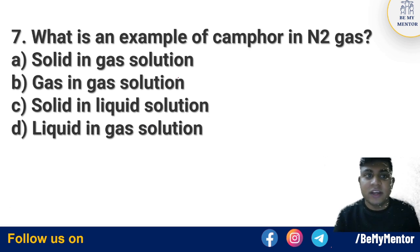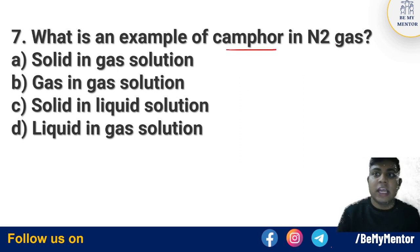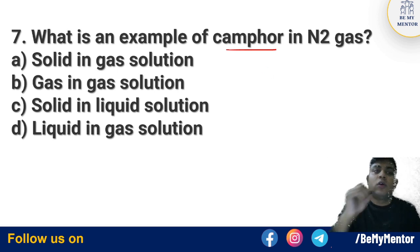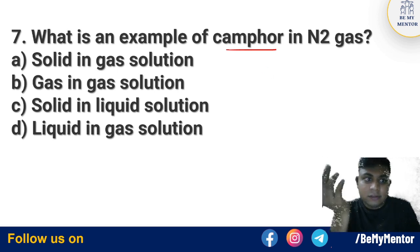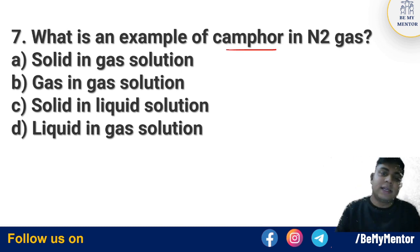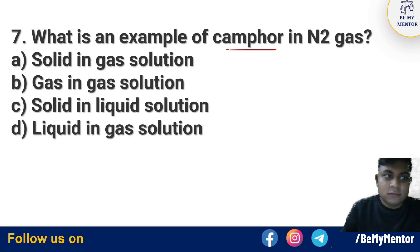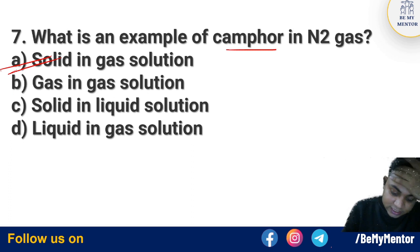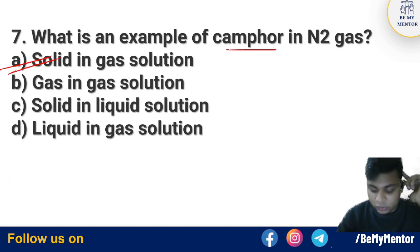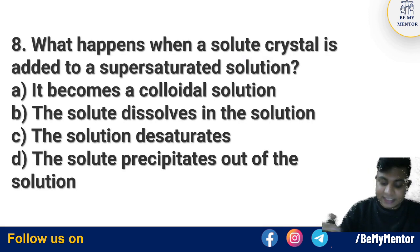Question number 7: What is the example of camphor in NO2? Camphor, or Kapoor, in NO2 gases shows direct transfer from solid to gas — it is directly converted into gas without passing through the liquid phase. What do we call this property? That is a task for you to answer.